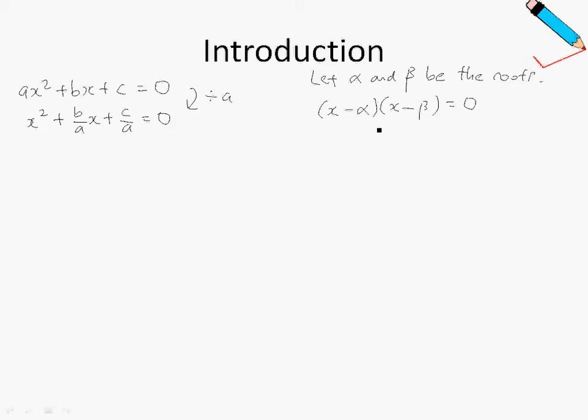Now why is this so? Recall that if I were to solve this equation, I will simply get x equals to alpha or x equals to beta. And this coincides with the assumption that I've made, which is that alpha and beta are the roots of the equation.